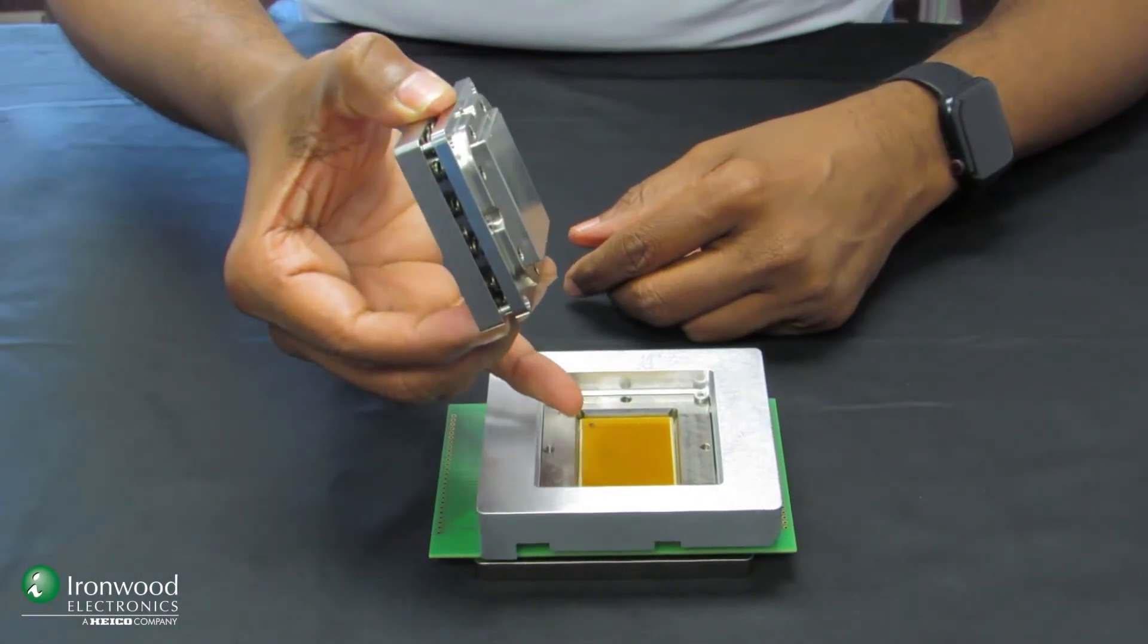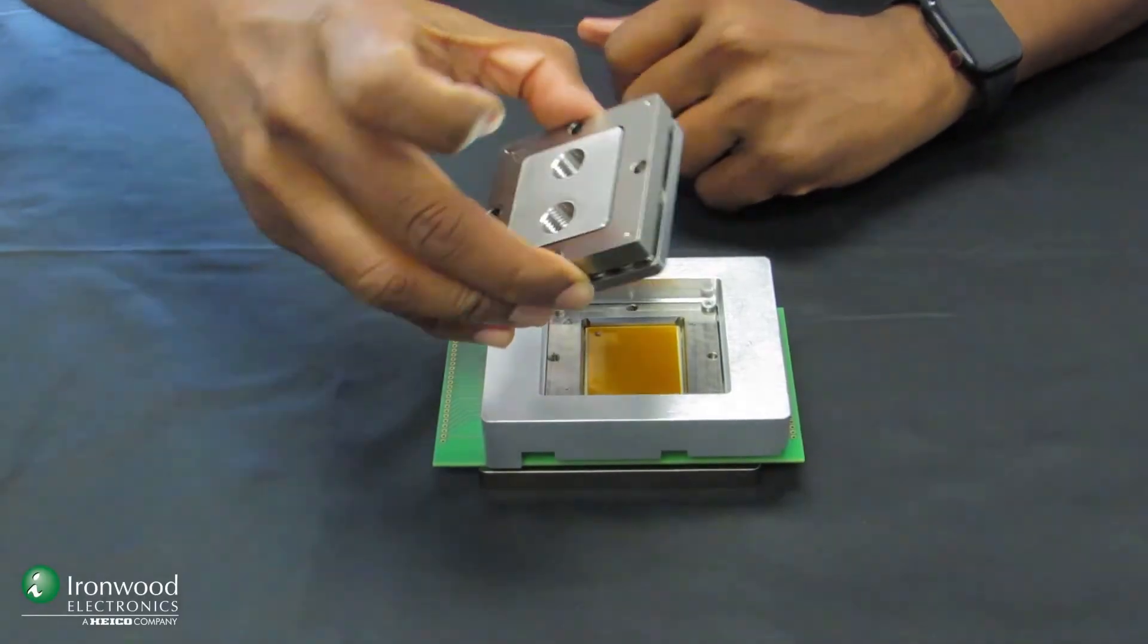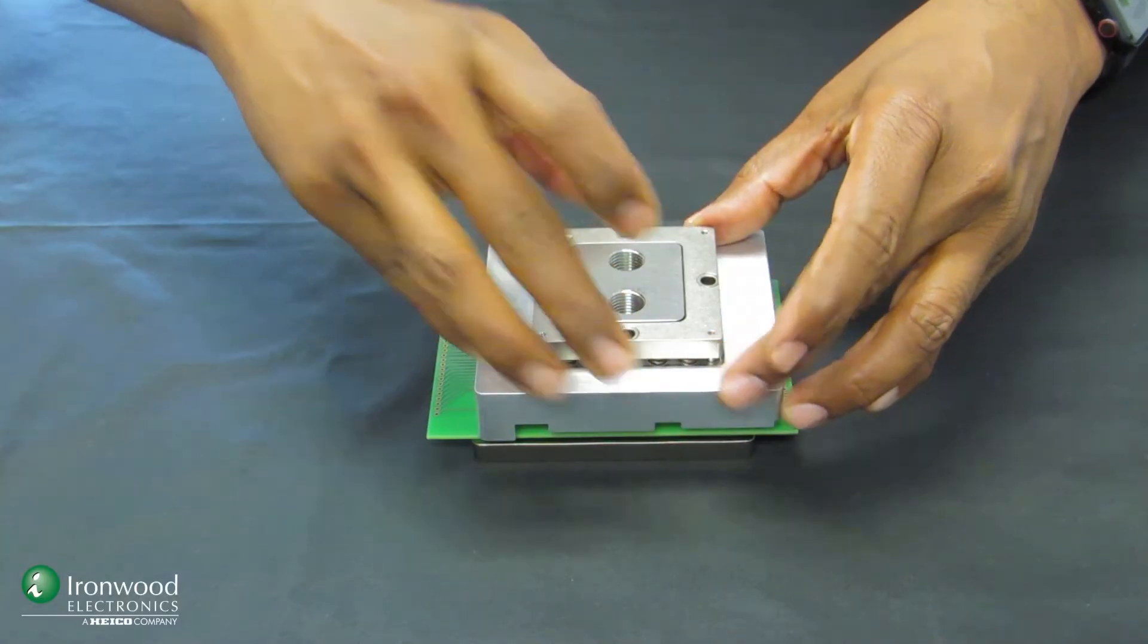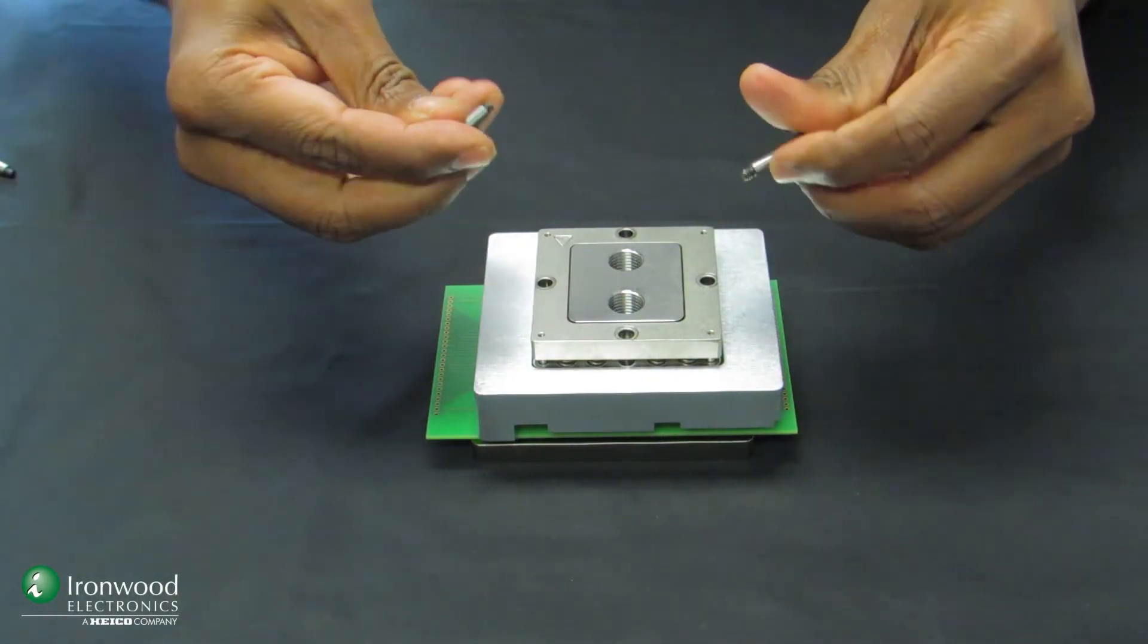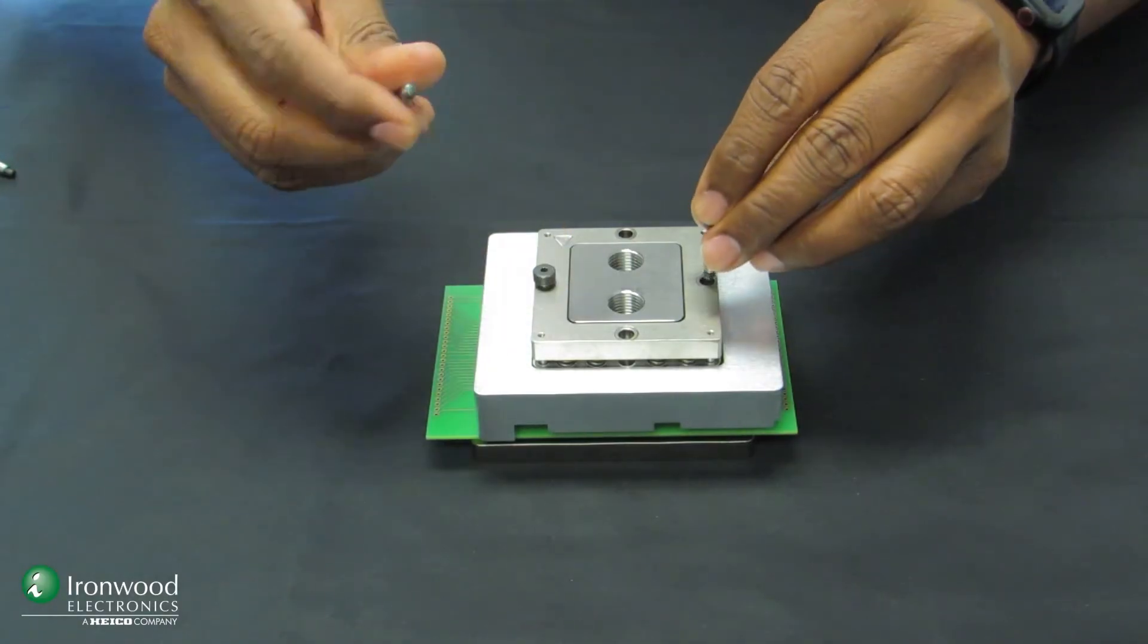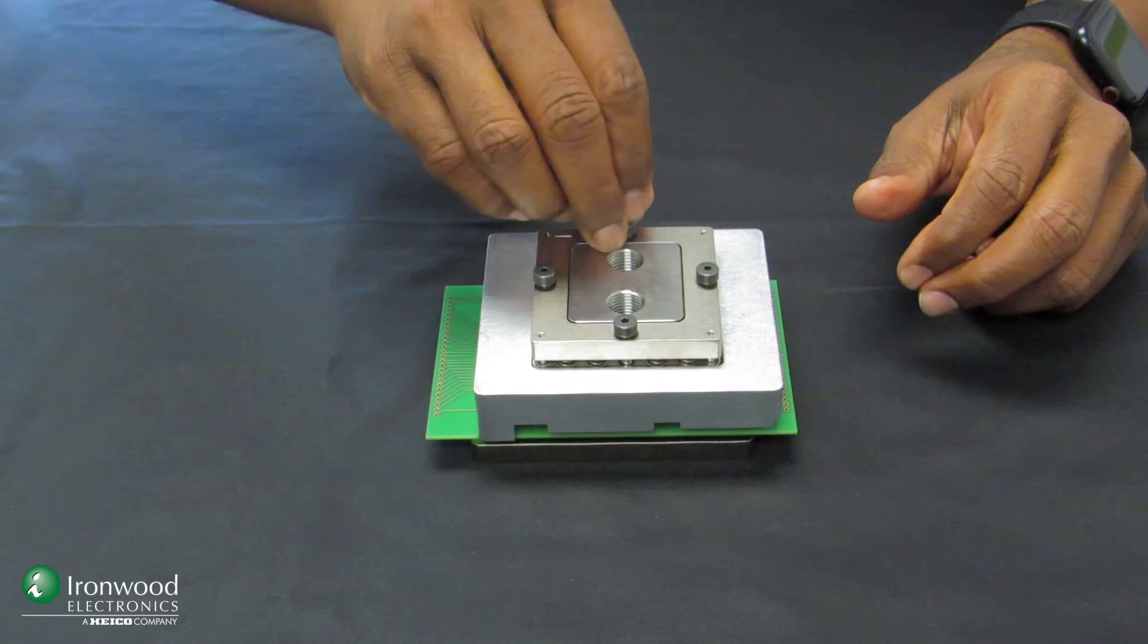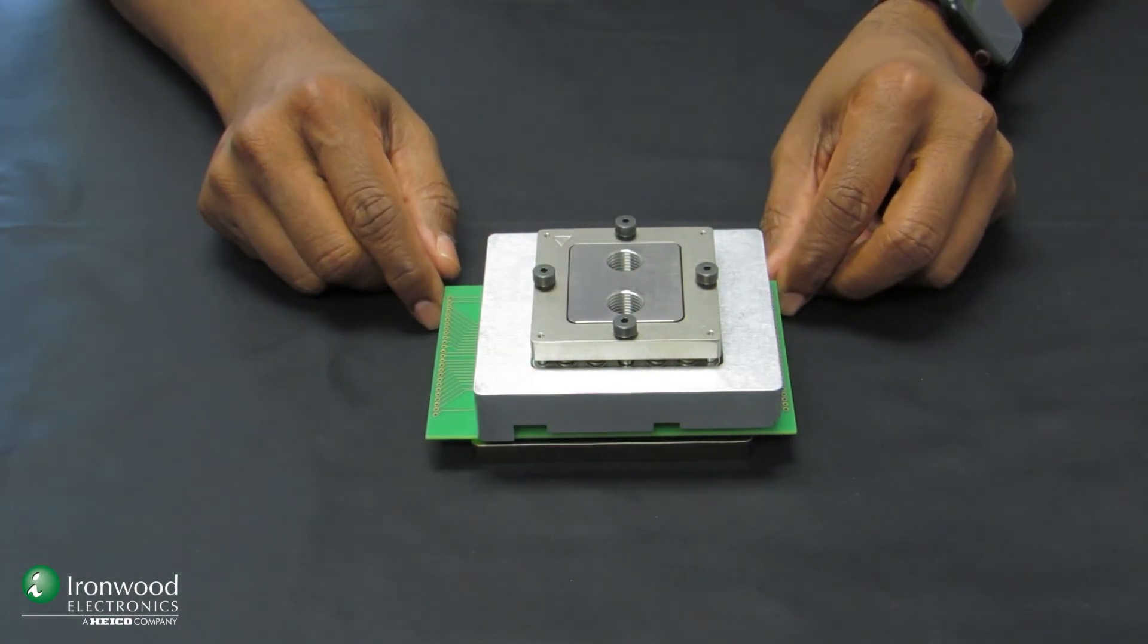To use, mount the socket onto the board, place the device, then place the liquid cooled lid with the spring-loaded compression plate. Use the hot-stop shoulder screws to compress them. Connect the liquid inlet and outlet and the system is ready to go. Thank you.